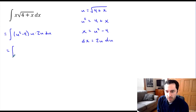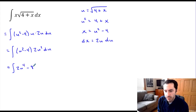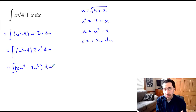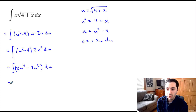Making all the substitutions, we get (u squared minus 4) times u times 2u du, which simplifies to (u squared minus 4) times 2u squared du. Distributing the 2u squared gives the integral of (2u to the fourth minus 8u squared) du. Just like with the first method, we've eliminated the radical and have an expression we know how to integrate.